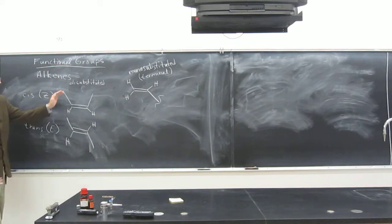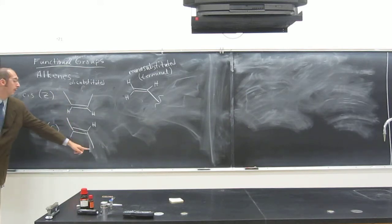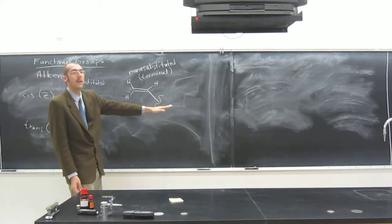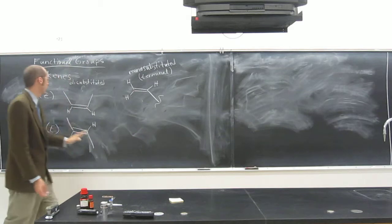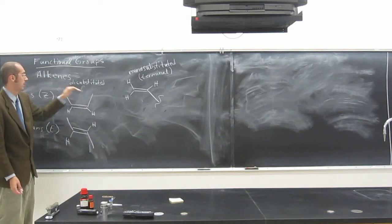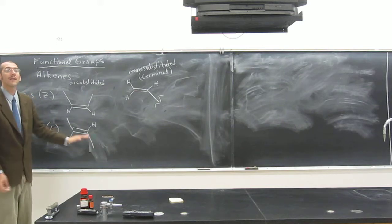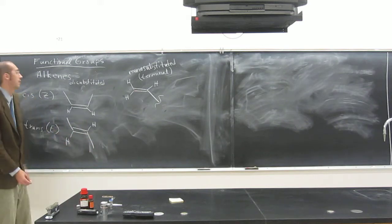So these ones are not terminal, right? Because there's a carbon on either side of the alkene. You guys see that? So here there's only a carbon on one side of the alkene. Here there's a carbon on both sides, right? Both sides. So we call these internal.